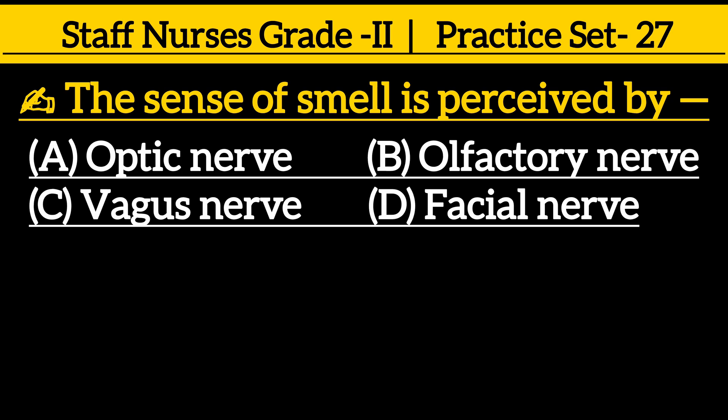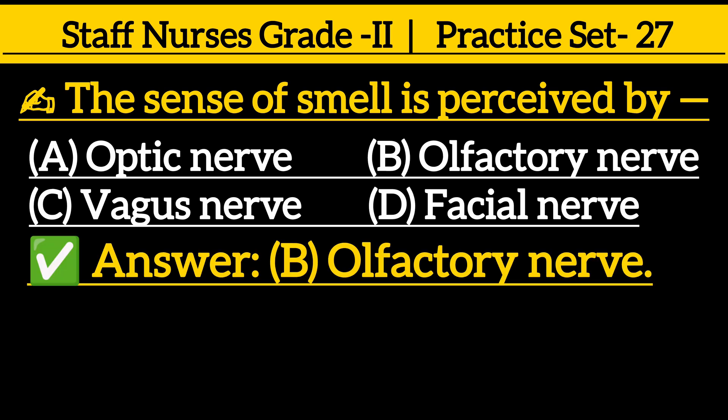Next one: the sense of smell is perceived by — option A: Optic nerve, option B: Olfactory nerve, option C: Vagus nerve, option D: Facial nerve. Correct answer is option B: Olfactory nerve.